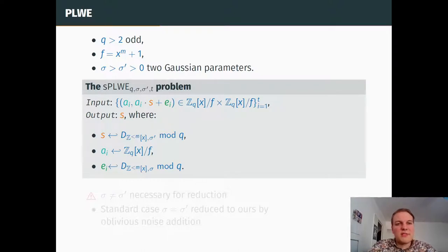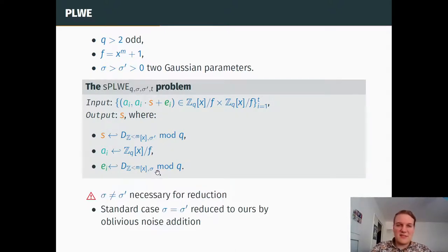Thanks to that, we are now ready to describe the polynomial learning with errors problem. In all of the following talk, I will be taking q odd, f will always be x to the m plus one. The PLWE problem is: given this kind of samples, compute the secret, where the secret follows a Gaussian distribution, A_i is uniformly sampled over polynomials mod f, and e_i follows also a Gaussian distribution. It's important to note that sigma prime is different from sigma.